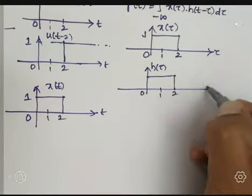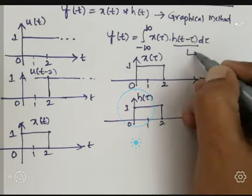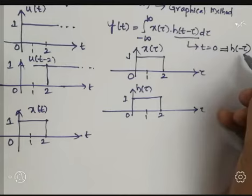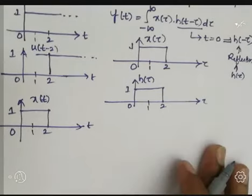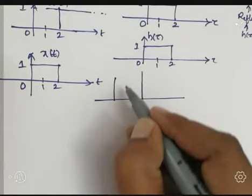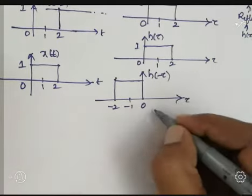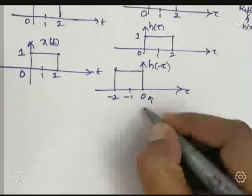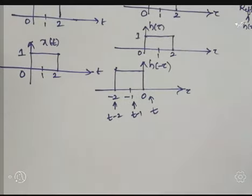As per the formula we want h(t-τ), so we start by putting t equal to 0, giving us h(-τ). h(-τ) is the reflection of h(τ) — replacing τ with minus τ. This reflected signal runs from 0 to minus 2. After substituting t=0, this point acts as t and the other end acts as t-2, giving h(t-τ) two ends: t and t-2.